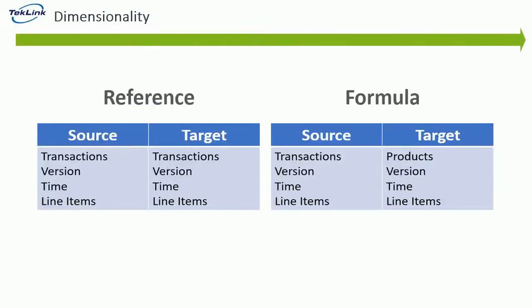The first thing we're going to talk about is dimensionality. This refers to every dimension shown in a table while creating the module for the first time. You can find these while in blueprint mode or in pivot. If your source and target modules have the same dimensionality, then a straight line item reference is enough to link the two tables together.